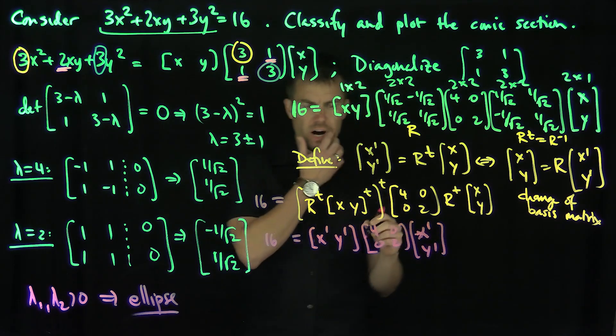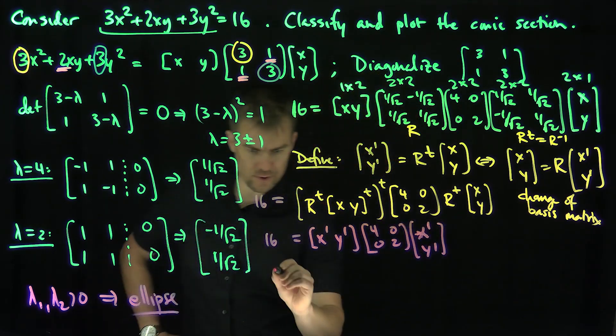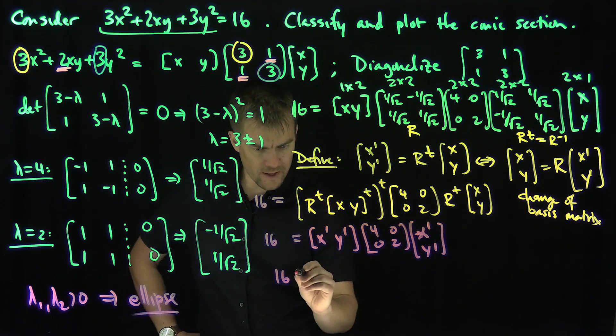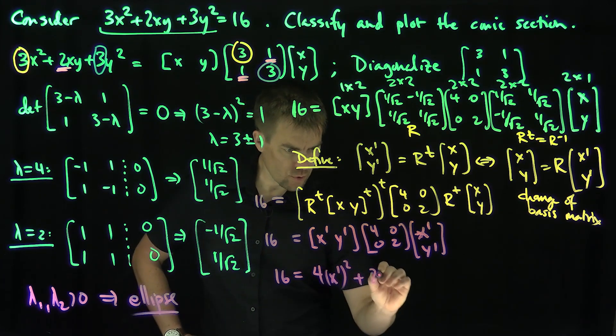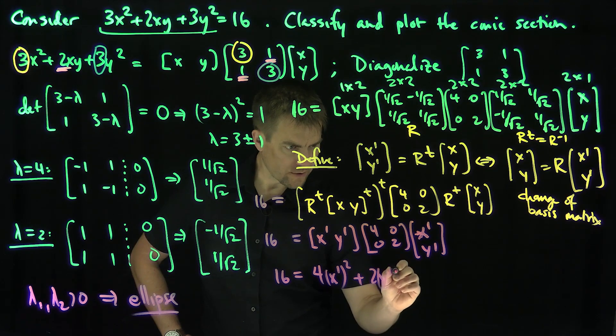And so our equation now is what? This turns into, if we calculate this, this turns into 16 = 4(x')² + 2(y')².